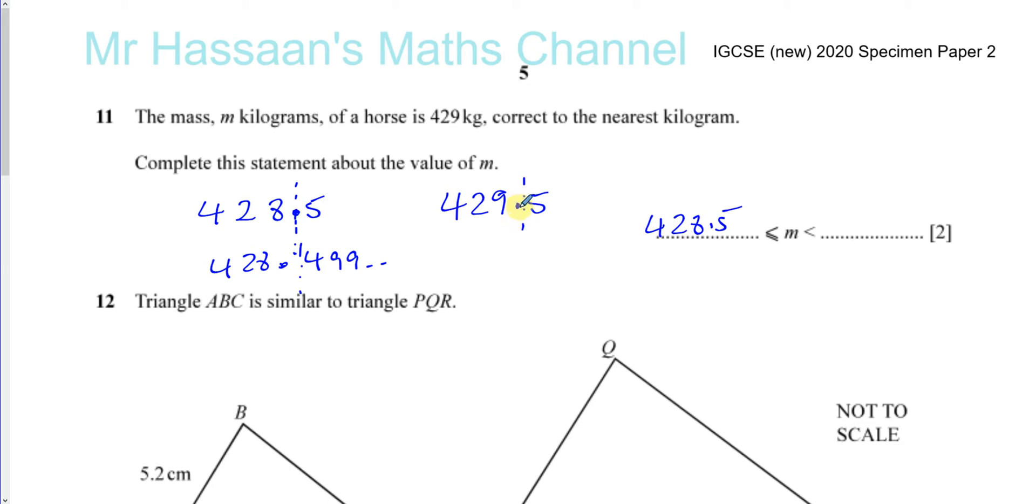Basically what they're showing us here is an inequality sign. So what this means is the mass of the largest mass of the horse is just before 429.5. So, for example, 429.49999, continue on like that. If you round that, you're going to get 429. So anything that's just below 429.5 will round to 429.